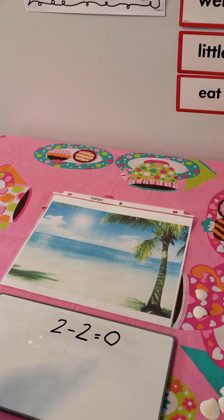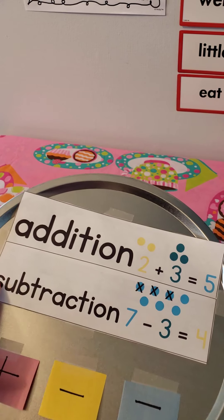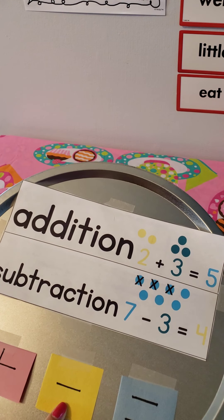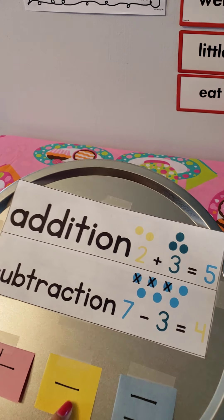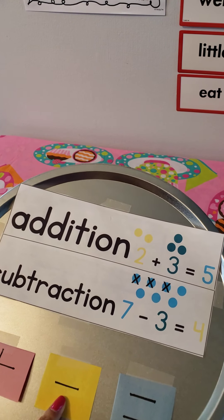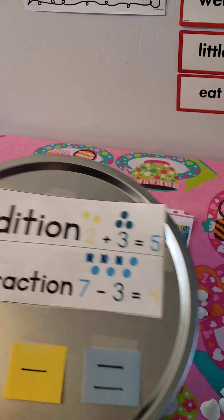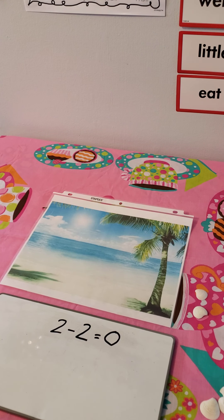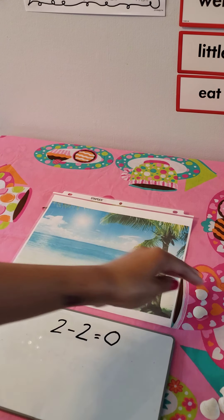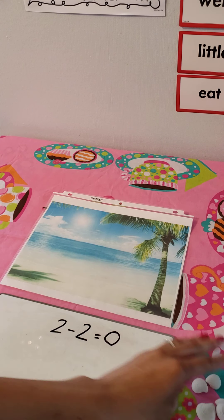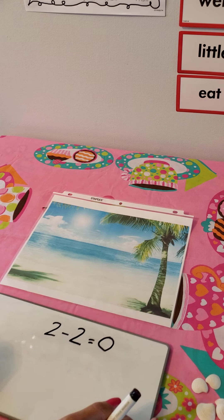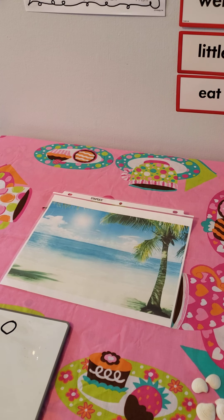Remember, when you subtract, you take away. So we did subtraction today. The minus symbol means to take away. We started with ten and we took all ten away, slowly, bit by bit. And now we have zero seashells left.